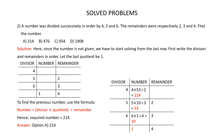Question 2: A number was divided successively in order by 4, 5 and 6. The remainders were respectively 2, 3 and 4. Find the number. You are given 4 answer options and you have to select which of these options is correct.